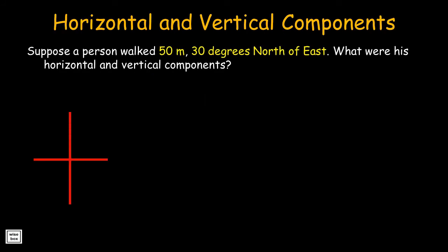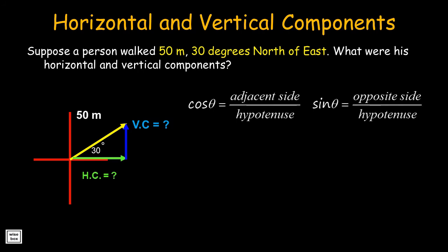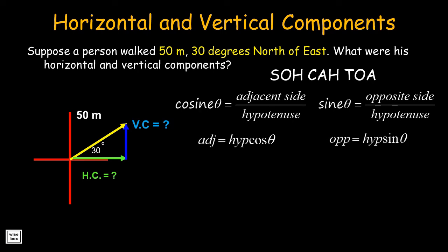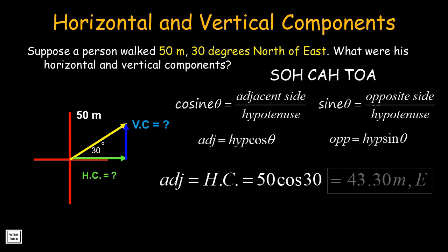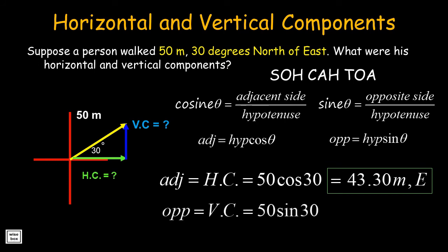Let's have another one. Suppose a person walked 50 meters at 30 degrees north of east. What were his horizontal and vertical components? We can use the formulas for cosine and sine functions — sine is opposite over hypotenuse, cosine is adjacent over hypotenuse, tangent is opposite over adjacent. The adjacent, which is the horizontal component, is equal to 50 times cosine 30, resulting in 43.30 meters east. The opposite, which is the vertical component, is equal to 50 times sine 30, resulting in 25 meters north.